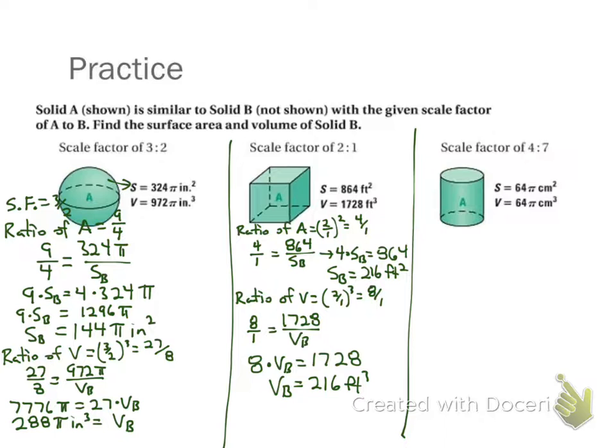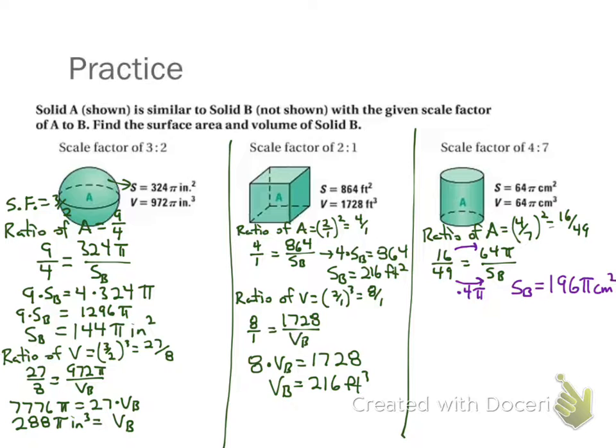Okay, last one here. Scale factor is 4 to 7, so my ratio of my areas is going to be 4 over 7 squared. That's 16 to 49. So that becomes 16 over 49 equals 64 pi over the surface area of B. Now instead of doing a cross product, which we could always do, let's see if we can figure out a little shortcut here. If we look at 16, to get from 16 to 64, I'd multiply it by 4 pi. So that means I could almost do the same thing with 49, because it's really just changing the fraction. 49 times 4 is 196, so our surface area of B turns out to be 196 pi centimeters squared. If you don't agree, well, do cross product and you'll see.